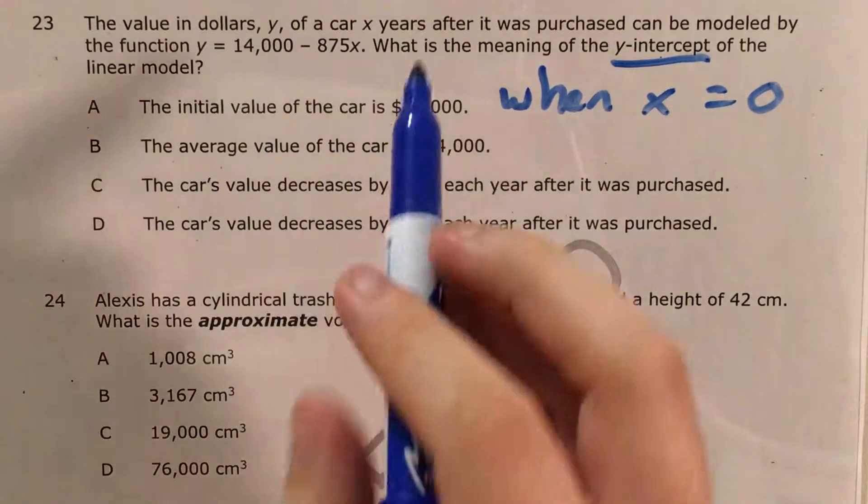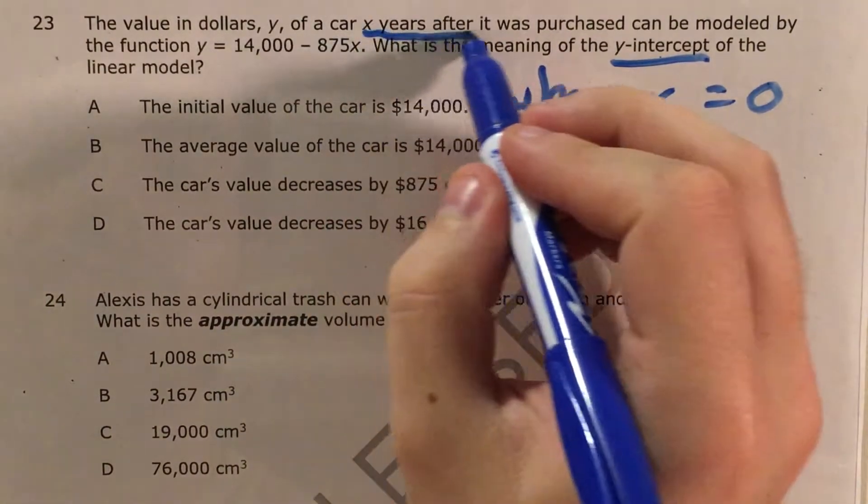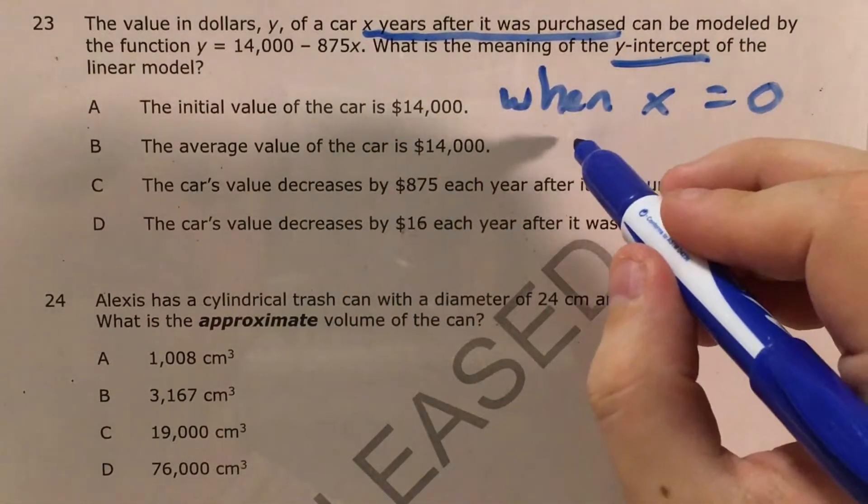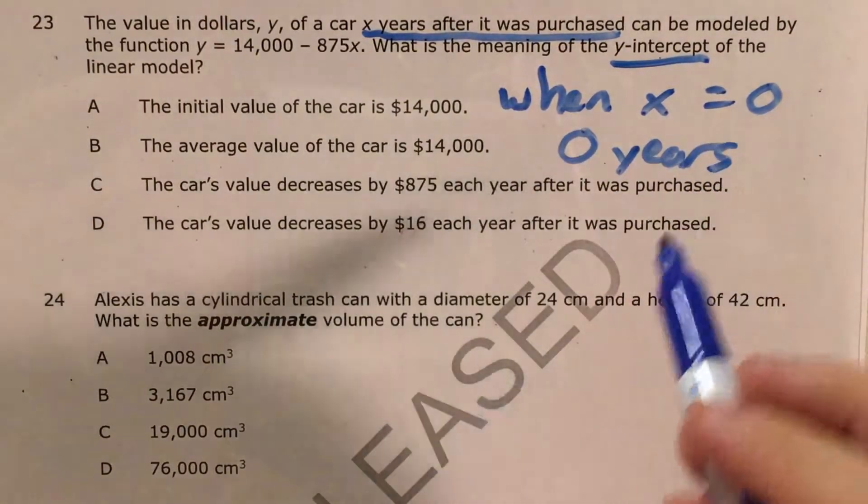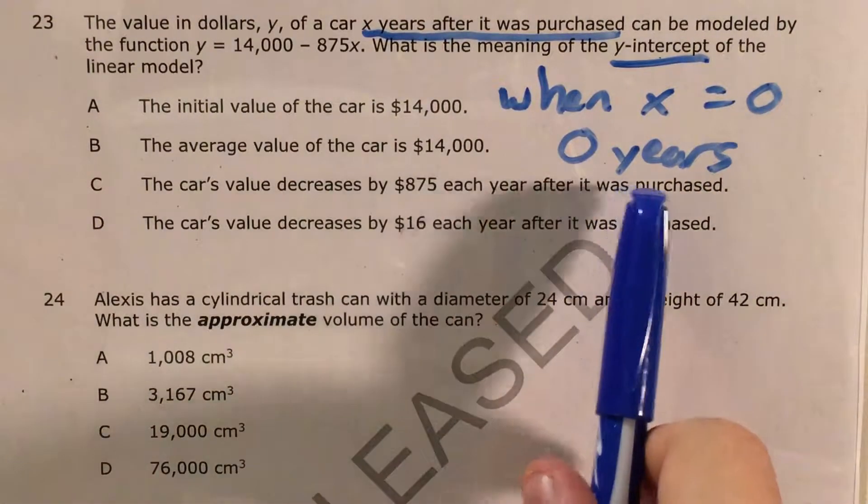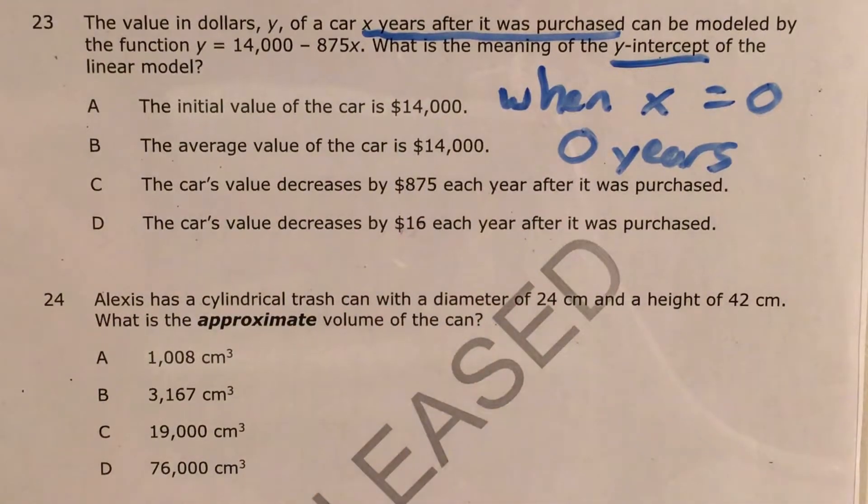And if I look back in the problem for the meaning of x, x is the years after it was purchased, which means my y-intercept means zero years after the car was purchased. Now, with this information, I'm going to go ahead and look at my answer choices.